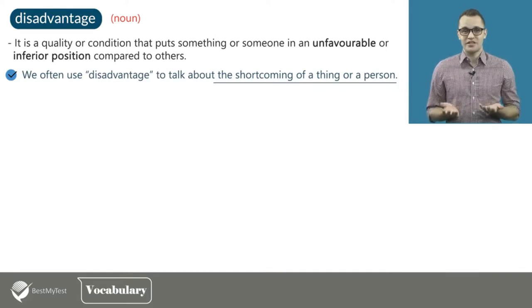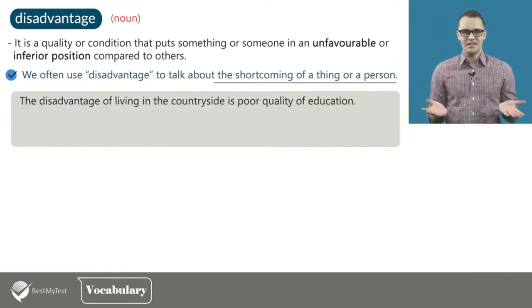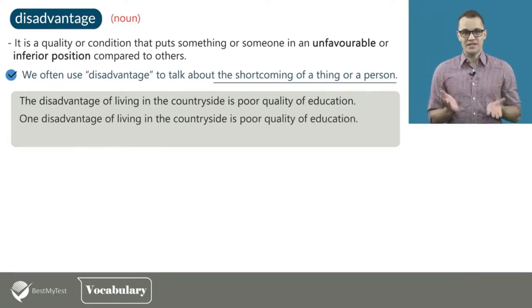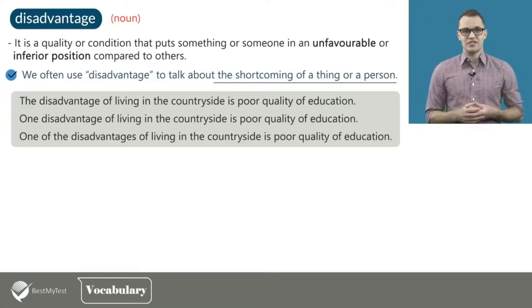For instance, the following three sentences use disadvantage to describe a shortcoming of living in the countryside. The disadvantage of living in the countryside is poor quality of education. One disadvantage of living in the countryside is poor quality of education. One of the disadvantages of living in the countryside is poor quality of education.